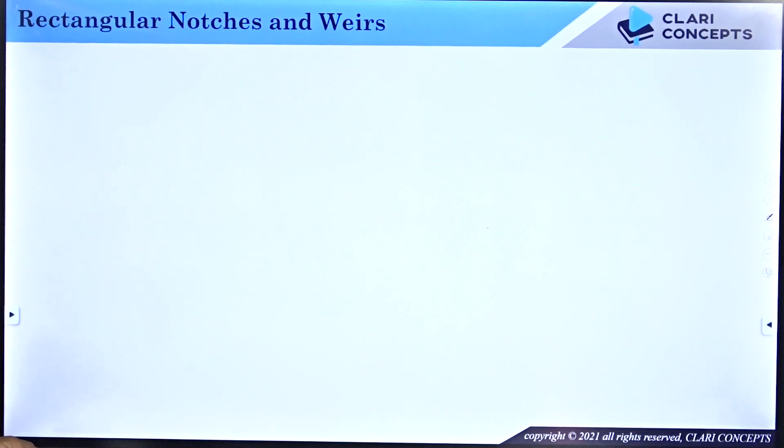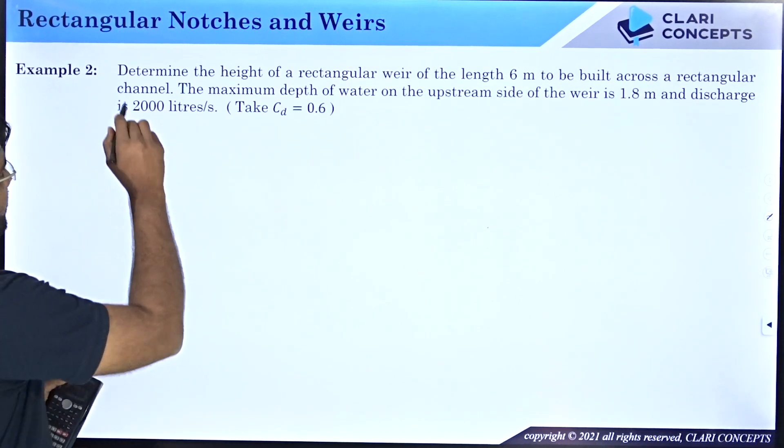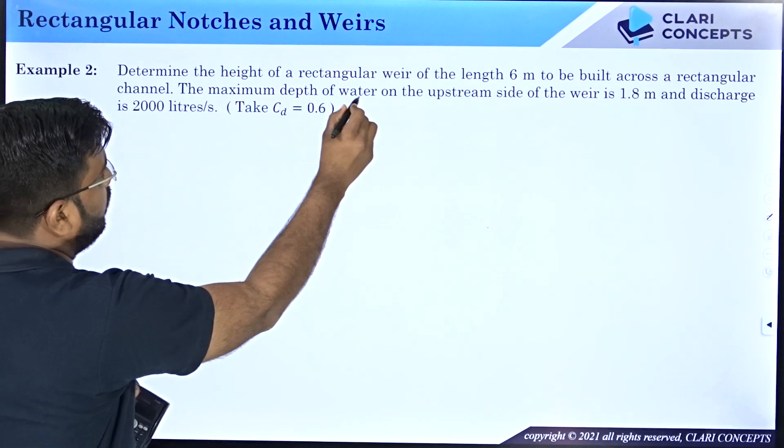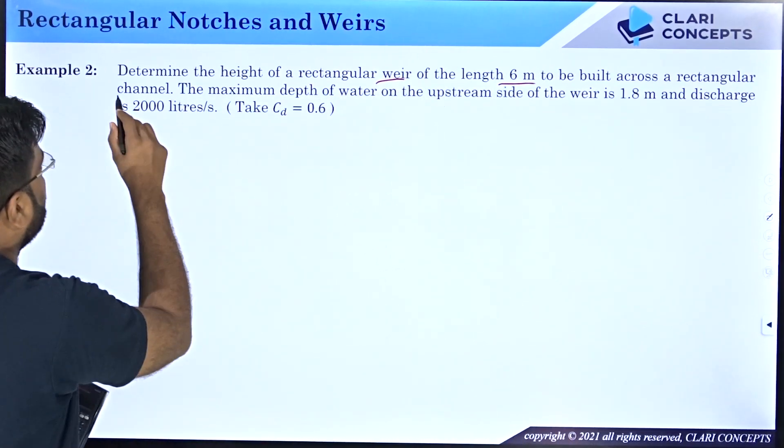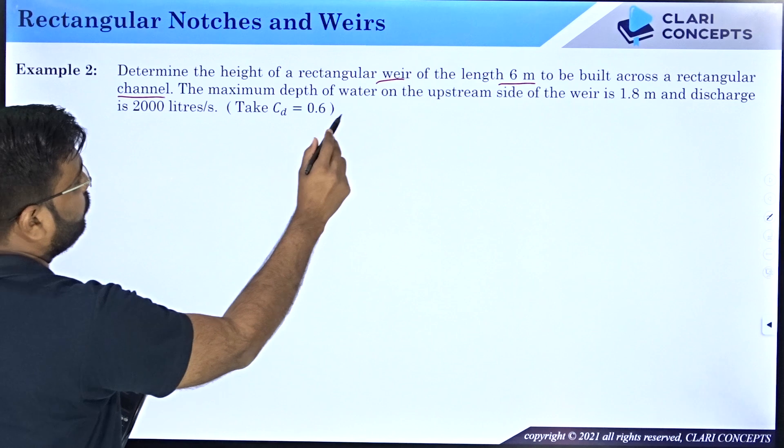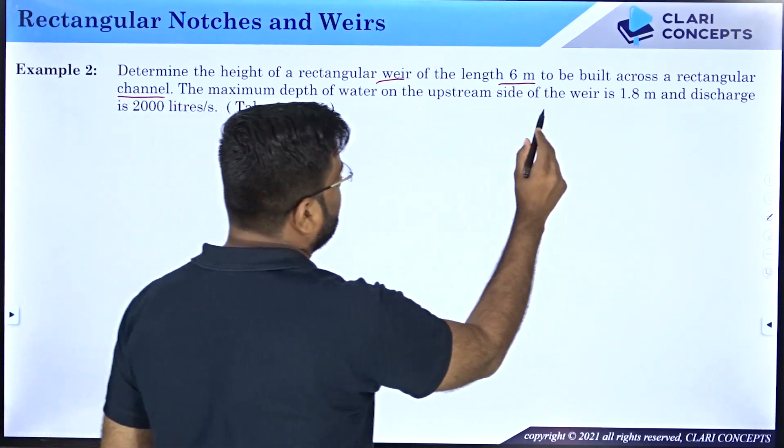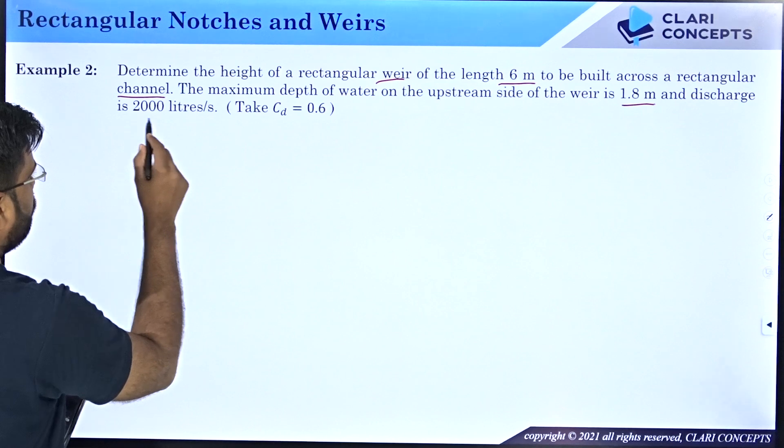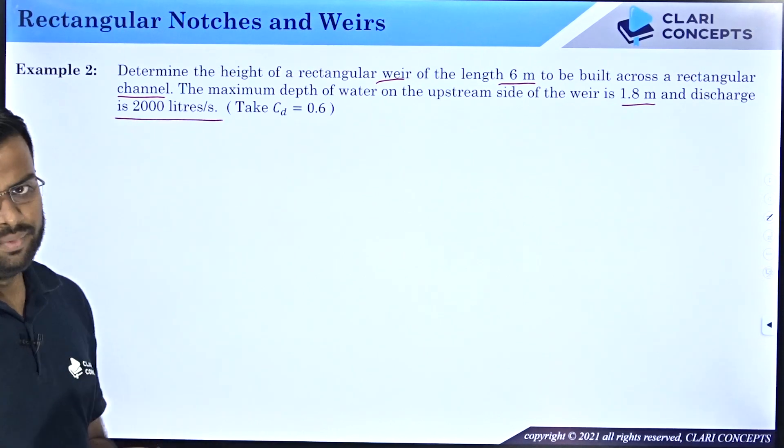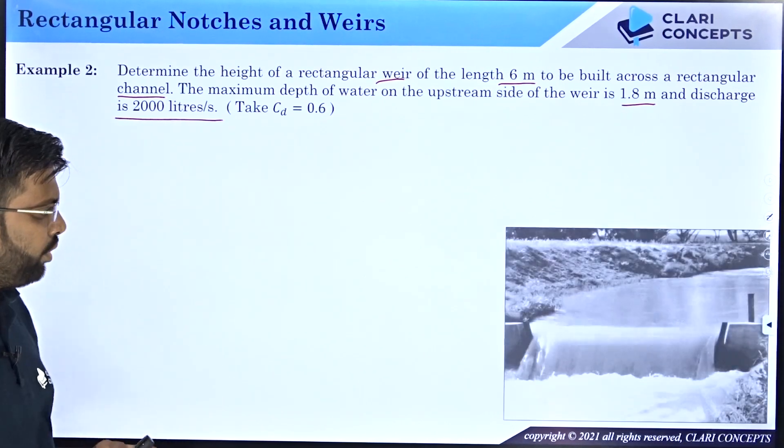Let us take another example. I have: determine the height of a rectangular weir of length 6 meter to be built across a rectangular channel. The maximum depth of water on the upstream side of the weir is 1.8 meters and the discharge is 2000 liters per second and take CD as 0.6. Now see what is given to you.